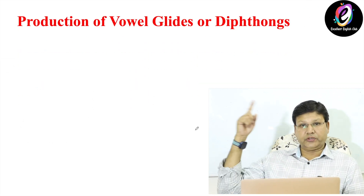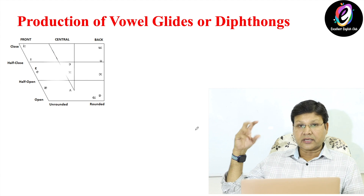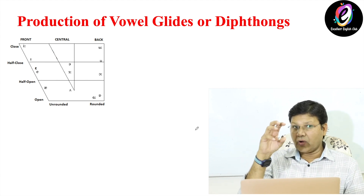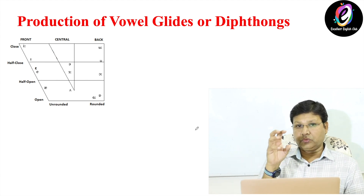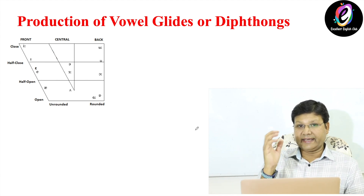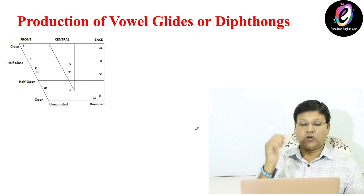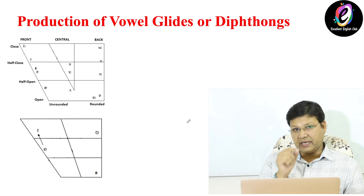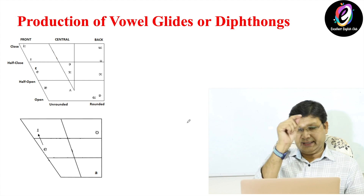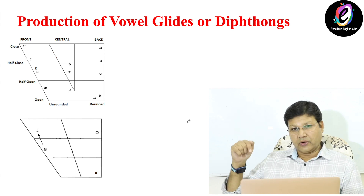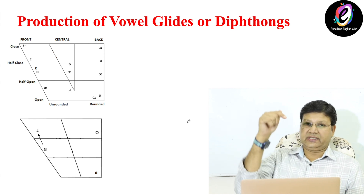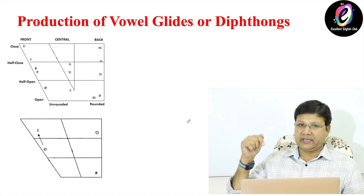This diagram shows the complete twelve pure vowels. Now I will show you the diphthongs one by one. For example, A and E — we will produce this sound from A to E, and it is called A-E.